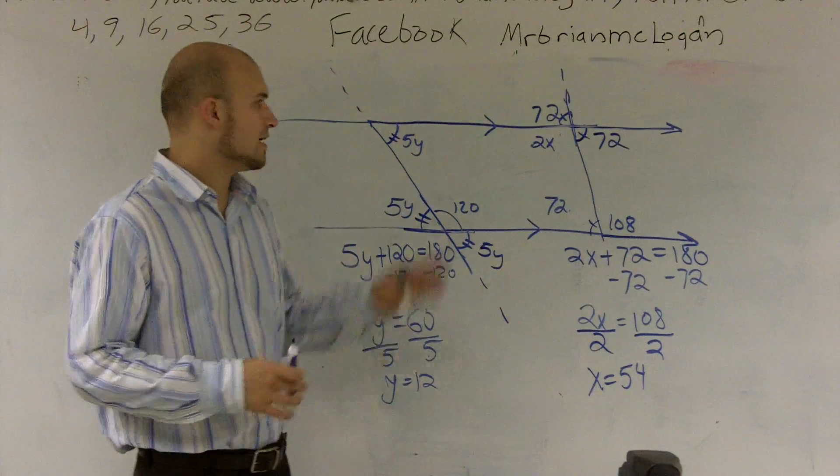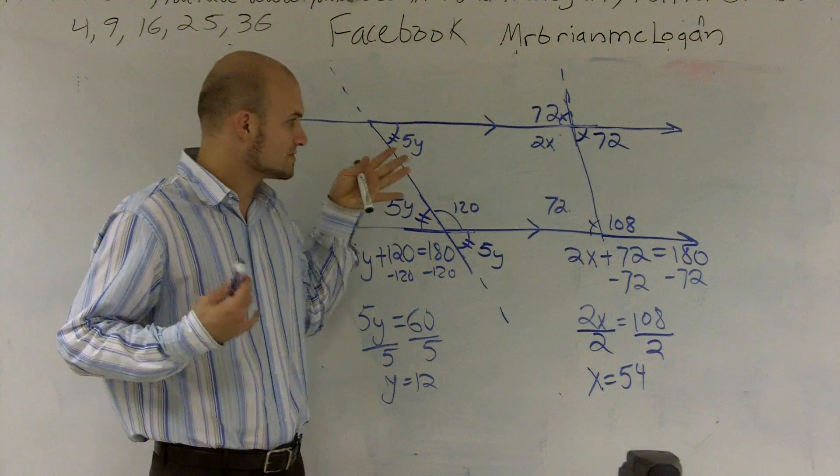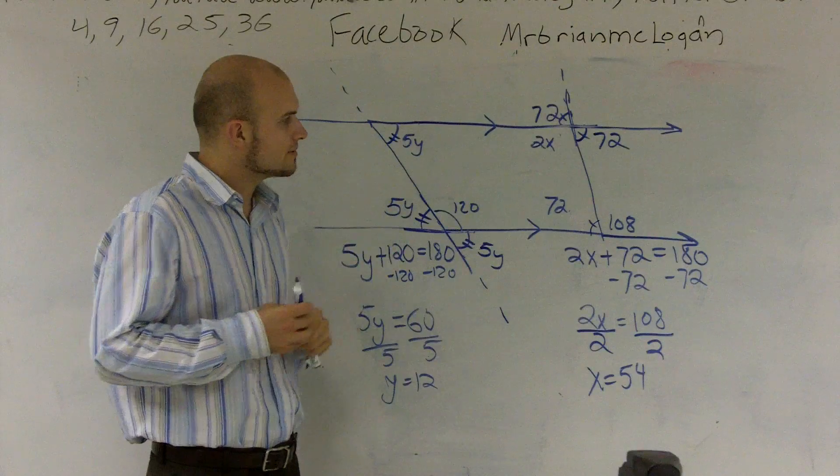So that's how you solve for x and y when given a quadrilateral or a trapezoid by extending lines to make parallel lines.